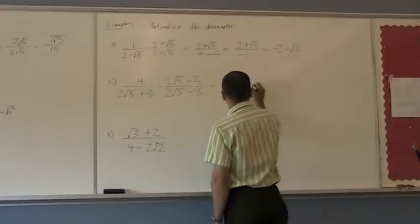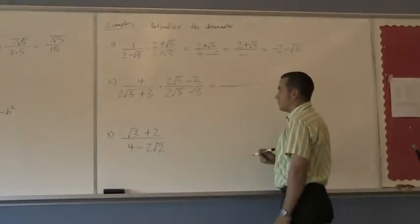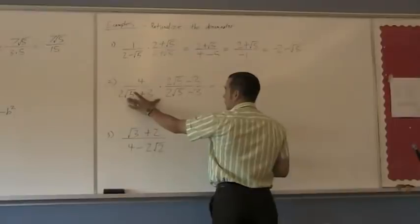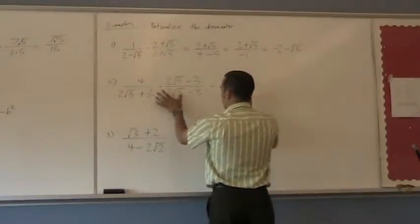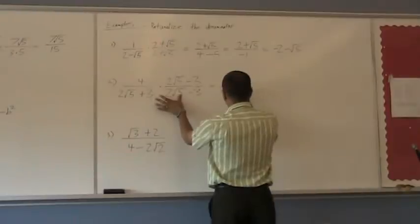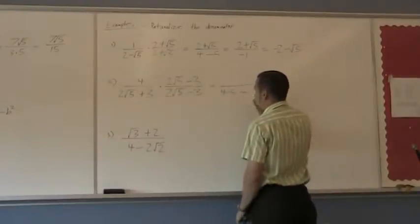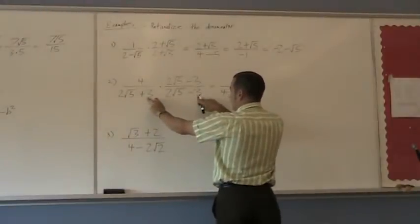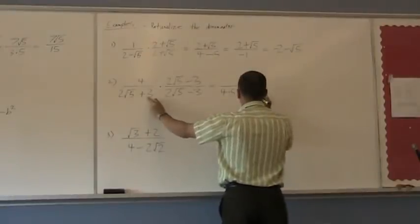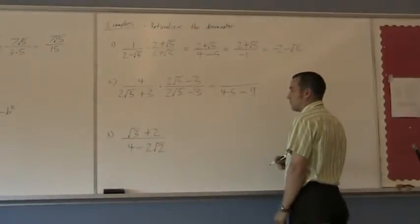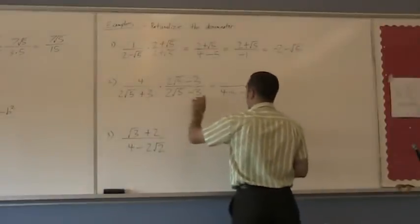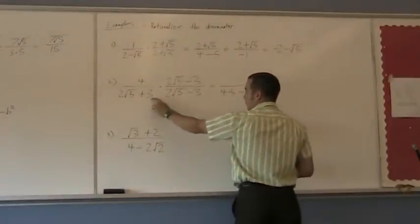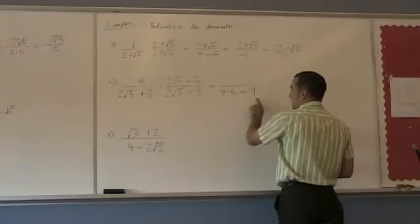So on the bottom, this is going to give me 2 times 2 is 4. Square root of 5 times square root of 5 is 5. Subtract 3 times 3 is 9. Now, remember the middle terms disappeared. This is basically, that's our a, this is our a squared, this is our b, this is subtract our b squared.